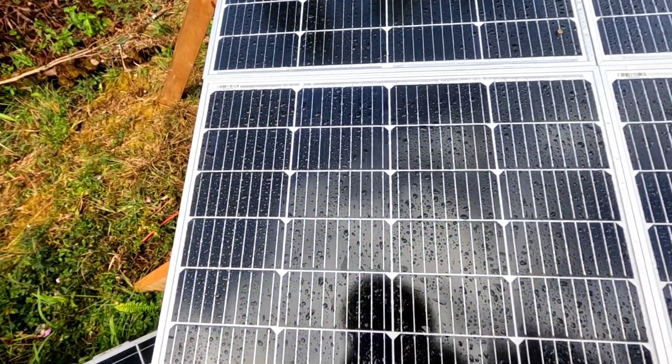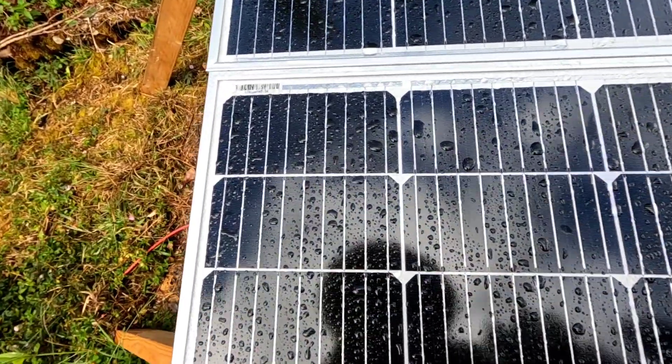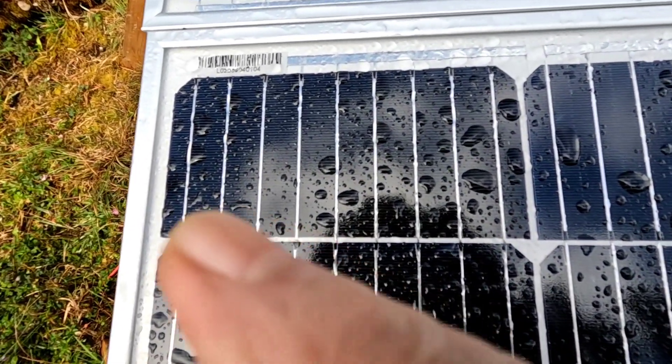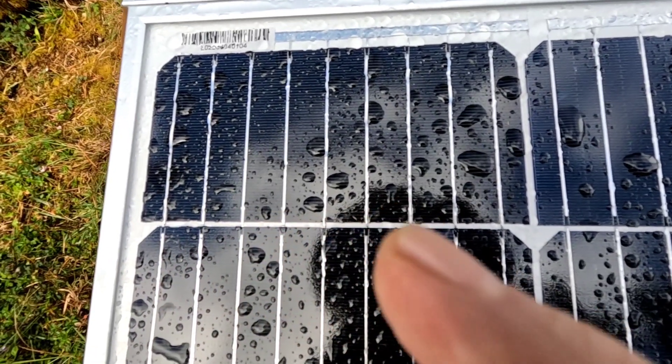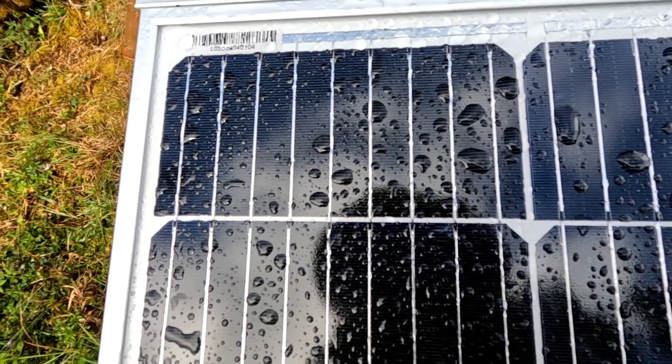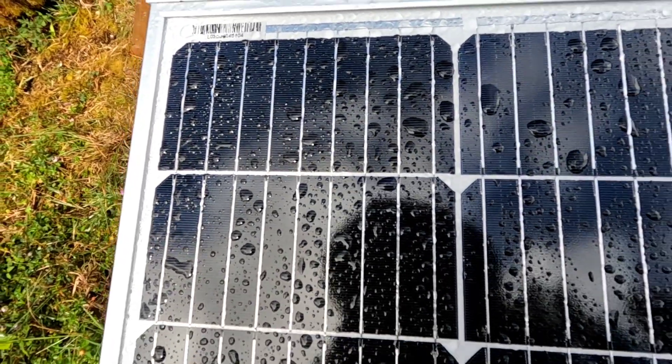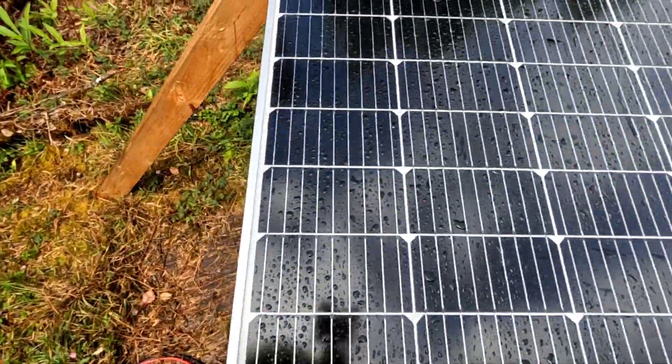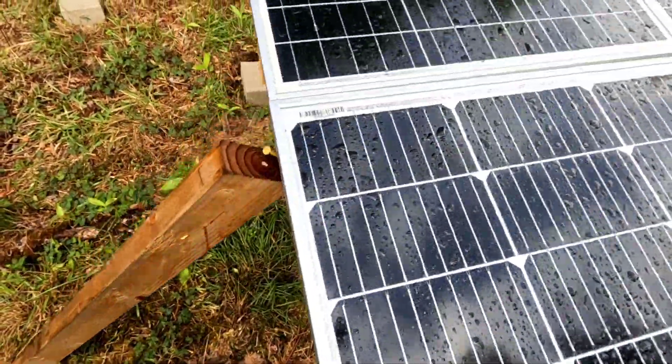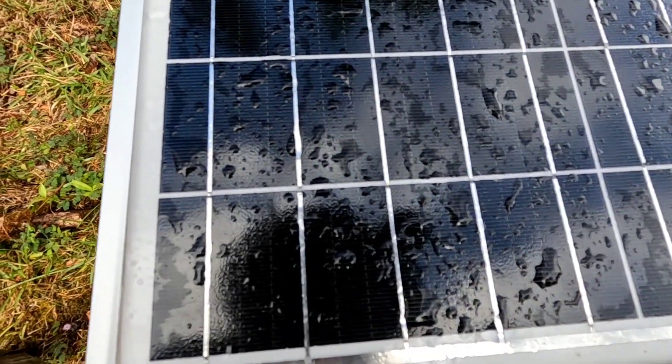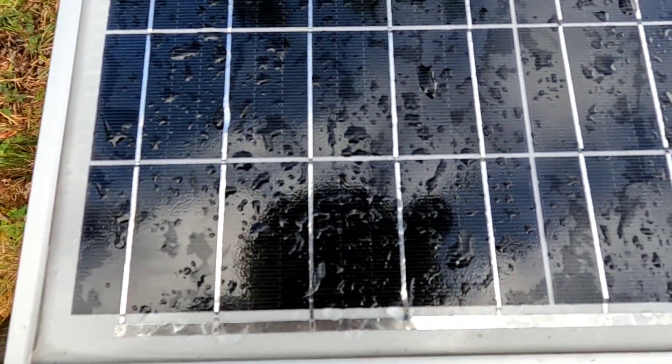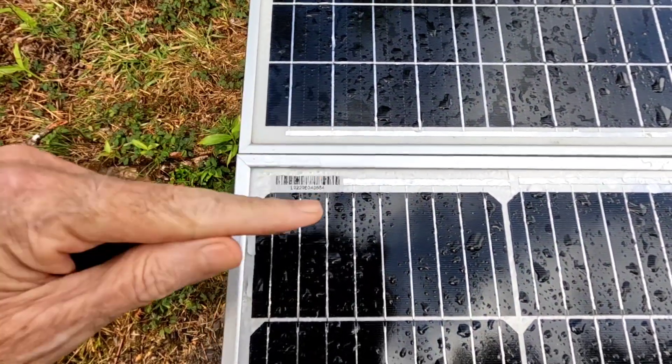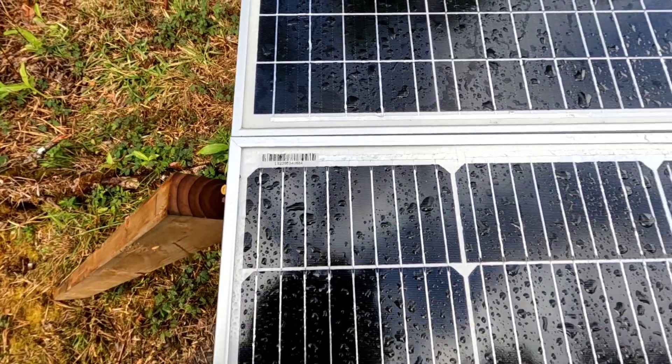So here's the new, these are the new nine bus bar, and you can see one, two, three, four, five, six, seven, eight, nine bus bars per cell. And then if I come up to the old classic version, you can see one, two, three, four, five - five per cell.